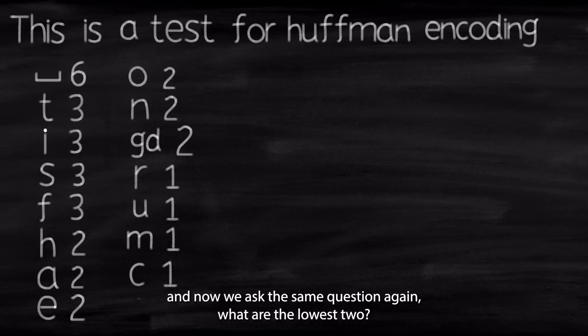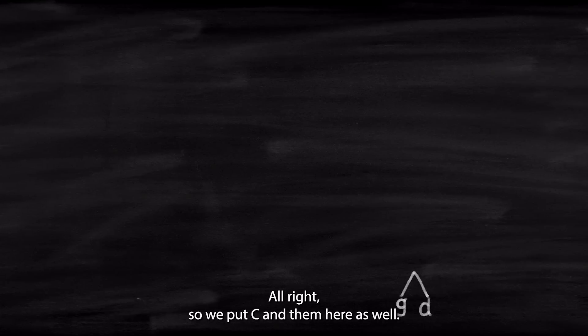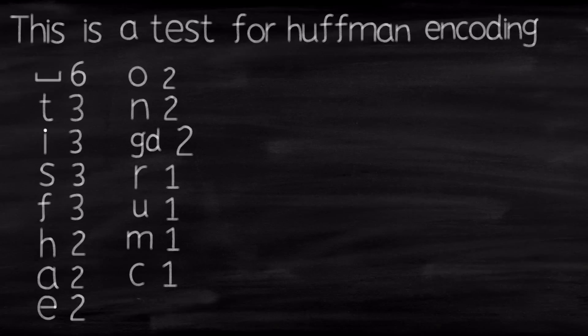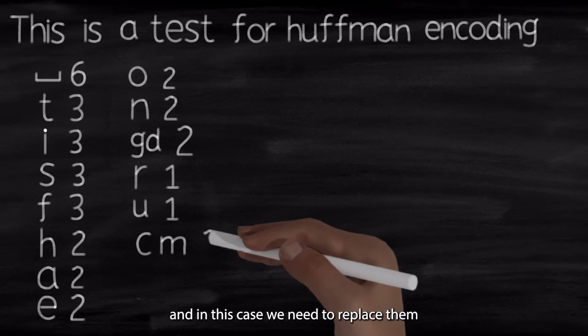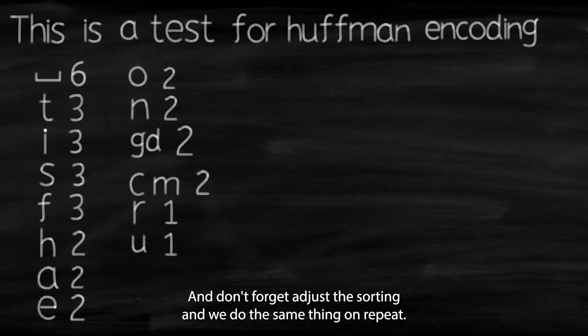But now it seems that we need to resort the array because the lowest are no longer one. Like, the lowest now is C, no G and D combined. So this has to go up here. And now we ask the same question again. What are the lowest two? That seems to be C and M. All right, so we put C and M here as well. So that is another tree. And in this case, we need to replace them with a combined object with C and M together. And don't forget to adjust the sorting and we do the same thing on repeat.